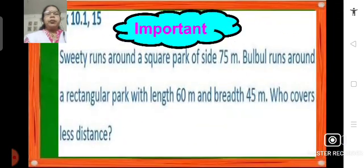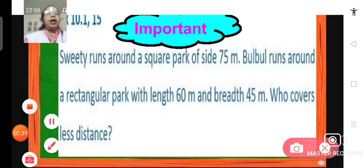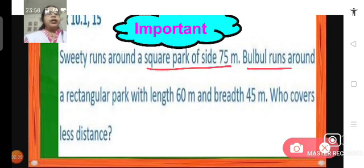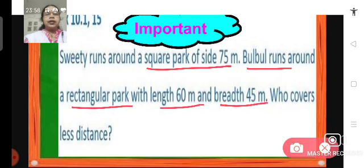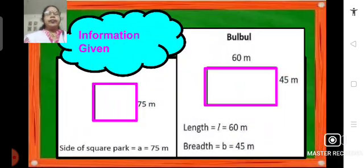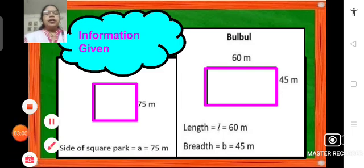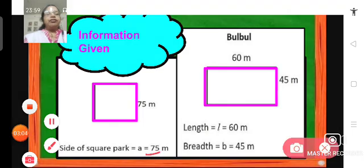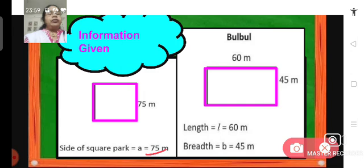Let us move on to problem number 15. This is also a very important problem. There is a girl Sweetie who runs around a square park of side 75 meters, and Bulbul runs around a rectangular park whose length is 60 meters and breadth is 45 meters. Who covers less distance? We have to find the perimeter of the square park and the perimeter of the rectangular park, then compare who runs less. The side of the square park is 75 meters, and the rectangular park has length 60 meters and breadth 45 meters.